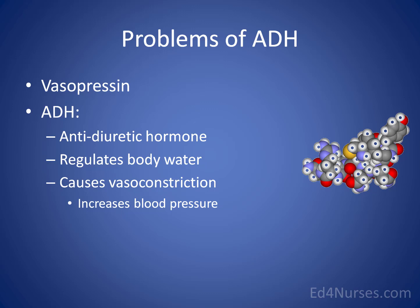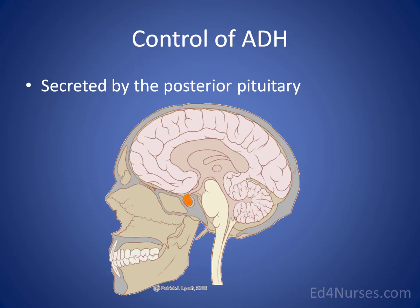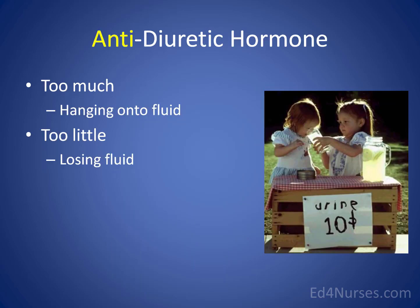The reason we're concerned about ADH here is because abnormalities cause water problems in our patients. Antidiuretic hormone is controlled by the posterior pituitary gland in the brain. So most situations that cause an abnormal ADH level will be related to the brain — neurologic dysfunction is a key association with both SIADH and diabetes insipidus.